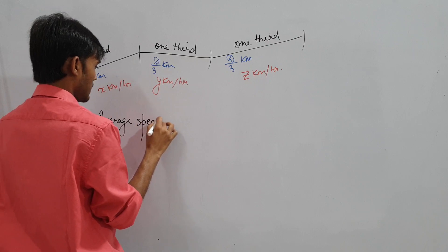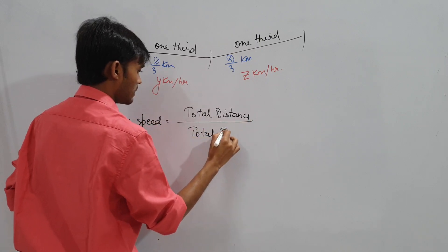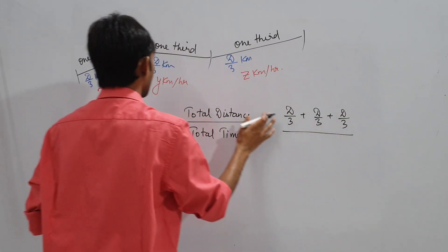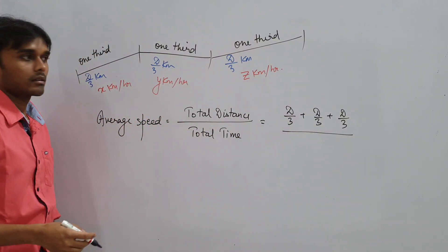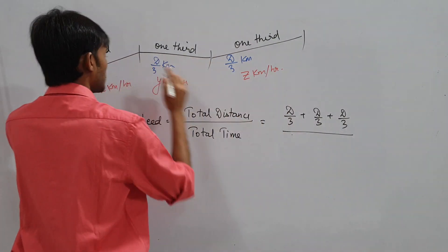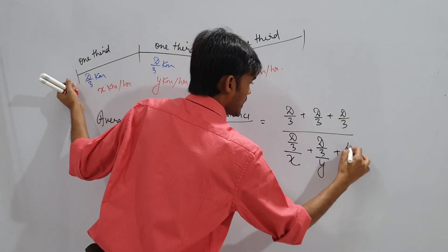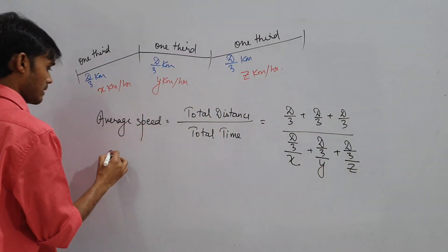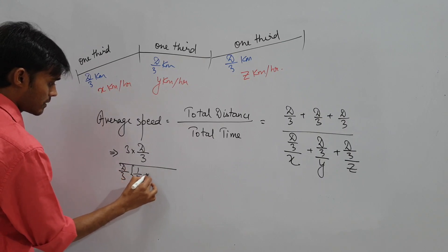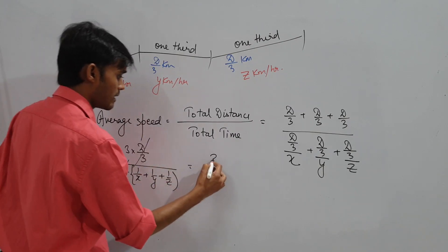Average speed = total distance / total time. Numerator: d/3 + d/3 + d/3 = d. Denominator: d/3·(1/x + 1/y + 1/z). Taking d/3 common and canceling, we get 3 divided by (1/x + 1/y + 1/z). Taking LCM of x, y, z and simplifying gives the formula: 3xyz divided by (xy + yz + zx).